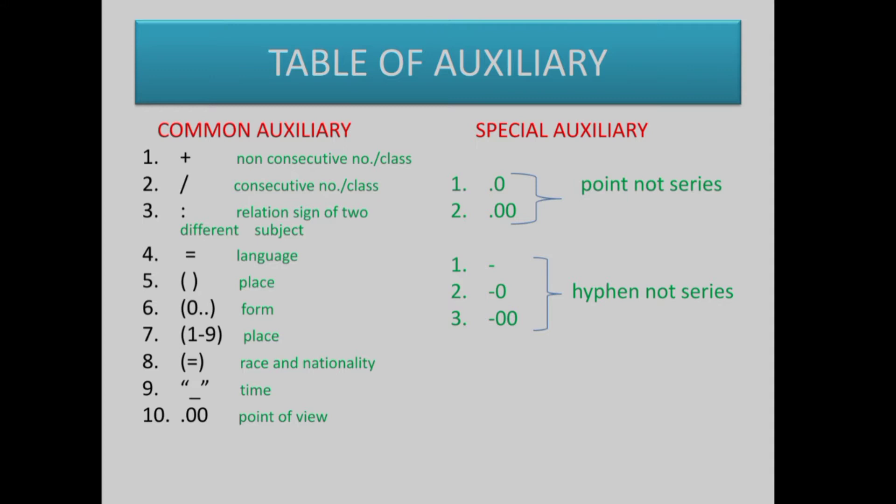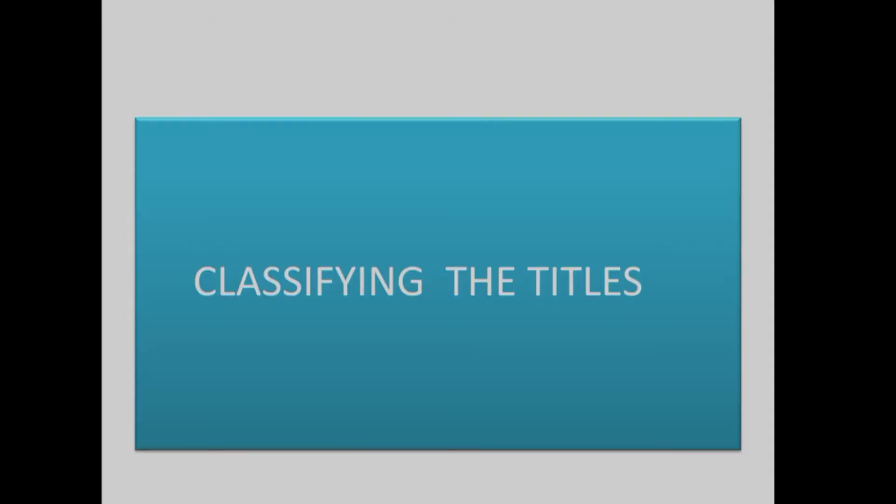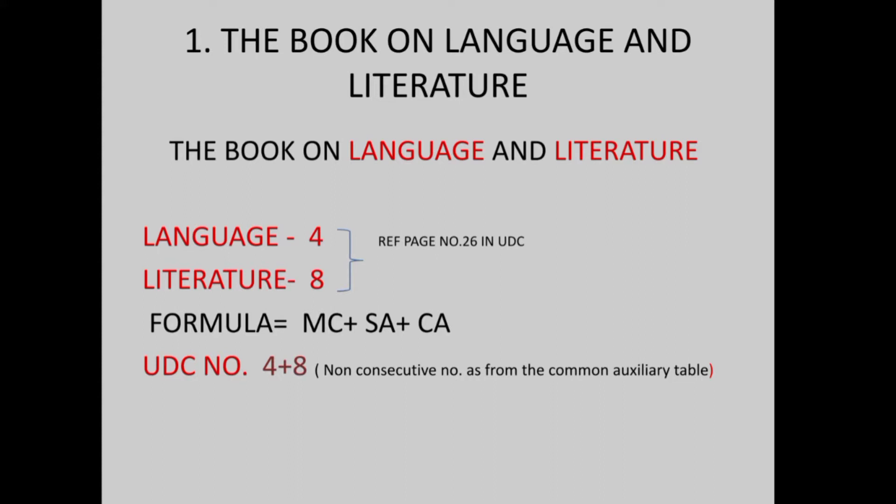Let's go to the first title. The first title is the book on Language and Literature. Let's look at the main class. There are two different subjects — Language and Literature are the main class table. Language and Literature are class 8. Let's look at the formula: MC plus SA plus CA. The UDC number is 4 plus 8. This is a non-consecutive number, as per the Common Auxiliary table.